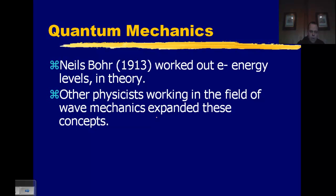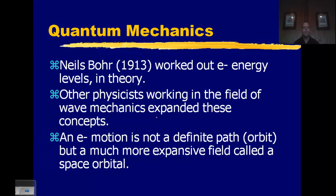So once Niels Bohr had worked out this idea of the energy levels in theory, we needed a better explanation of what the electrons were actually doing within these energy levels. Physicists in the field of wave mechanics begin to expand upon these concepts, and the key thing that they come up with is that the electron is not following a definite path. It's following, it's a region in space where we expect to find the electron. So instead of having orbits, we're going to start speaking of orbitals. Orbitals, regions of space where we expect to find the electron.